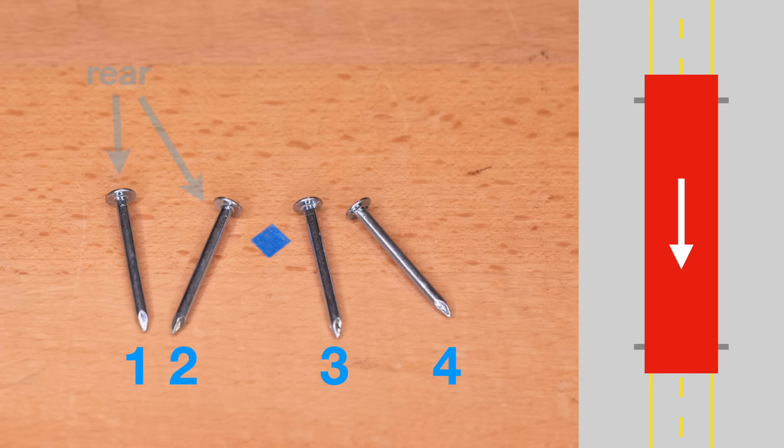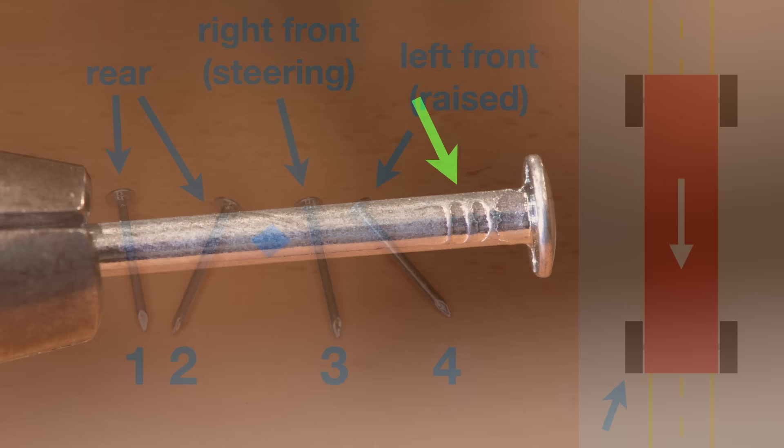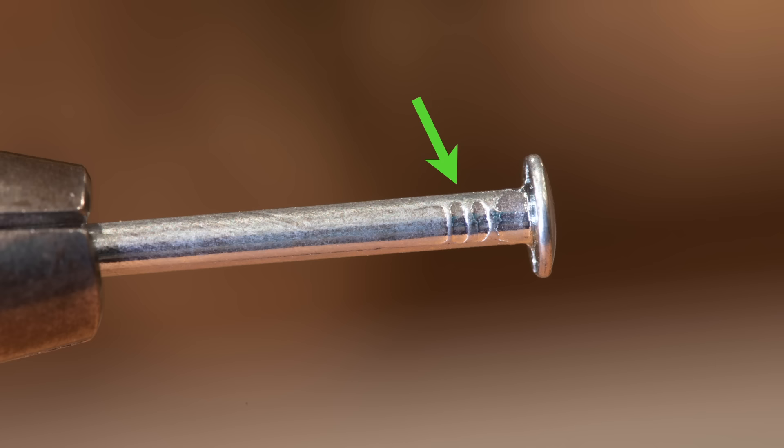Look at the axle nails and put them in order of smoothness. Pick the two smoothest ones for the rear, because they will carry most of the car's weight. Pick the worst one for the raised left front wheel. The remaining nail will be the steering axle. Each nail has ridges on the shaft. When using them for axles, make sure these ridges are facing up, so they rub less inside the wheel's hub.